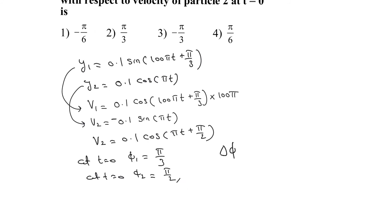The phase difference between particle 1 and particle 2 is π/3 minus π/2, which equals minus π/6.